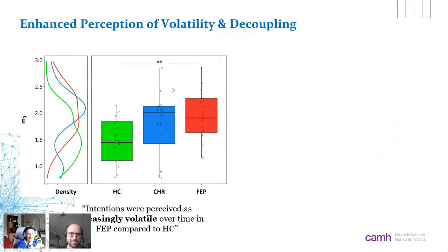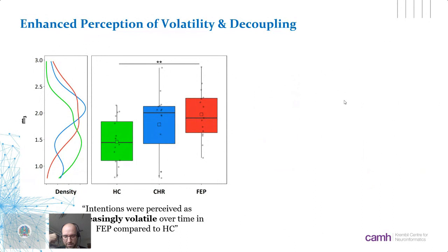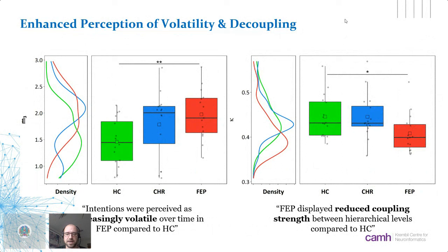There are different ways m3 could be changed: participants could perceive the environment as increasingly volatile or increasingly stable. Our hypothesis was that they would perceive it as increasingly volatile. Looking at m3 across the three groups, we found that m3 was increased in first-episode psychosis patients — confirming that intentions were perceived as increasingly volatile over time compared to healthy controls.